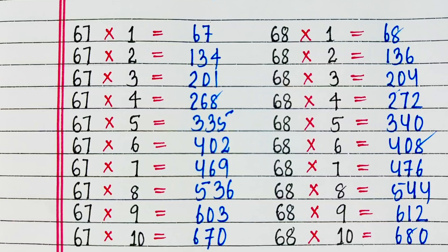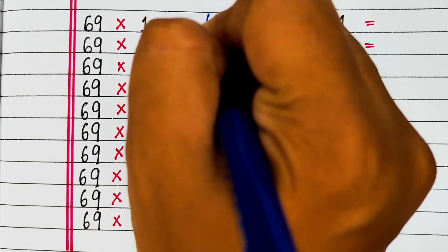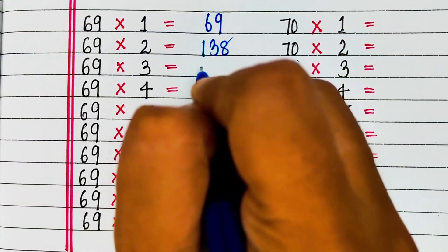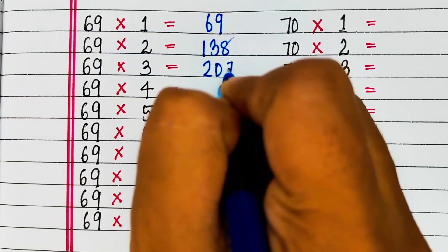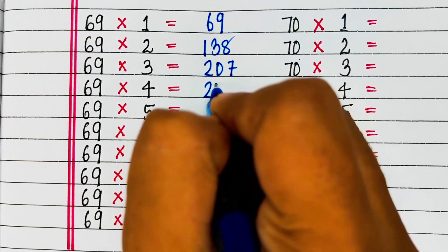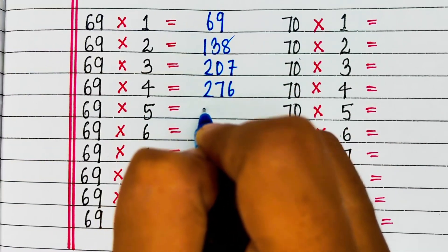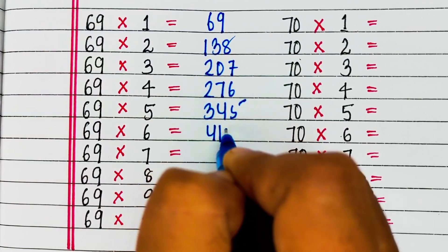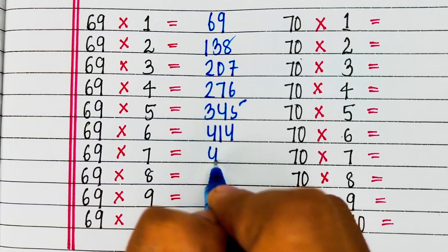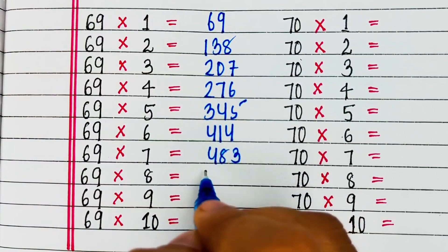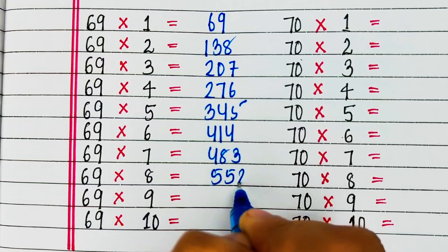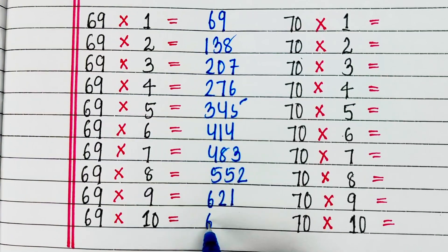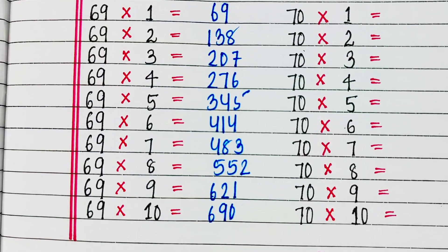Next is table of 69. 69 1s are 69, 69 2s are 138, 69 3s are 207, 69 4s are 276, 69 5s are 345, 69 6s are 414, 69 7s are 483, 69 8s are 552, 69 9s are 621, 69 10s are 690.